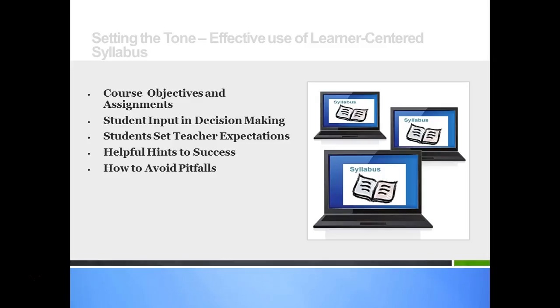You will also want to allow students to have input with decision making. Suggestions might include allowing input and decision making for assignment weights and options. This type of input would be specifically impactful for adult learners, especially those at Franklin.